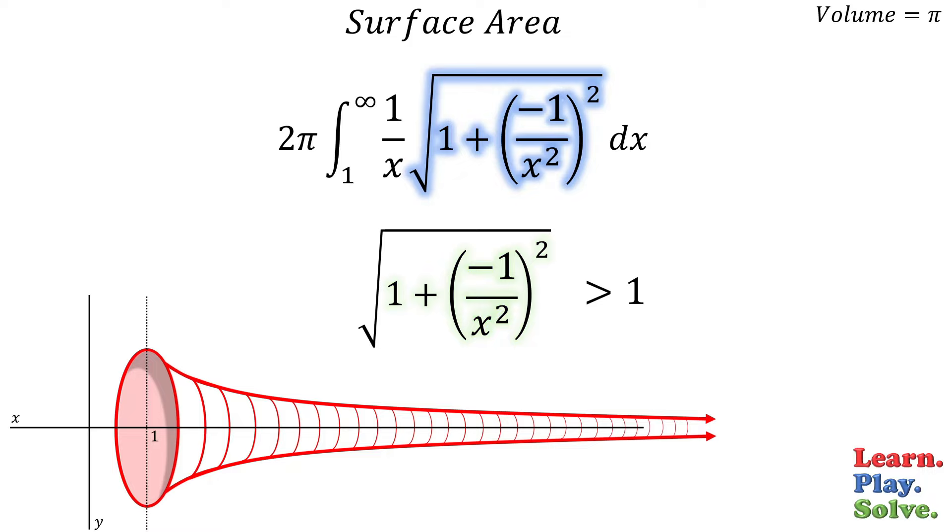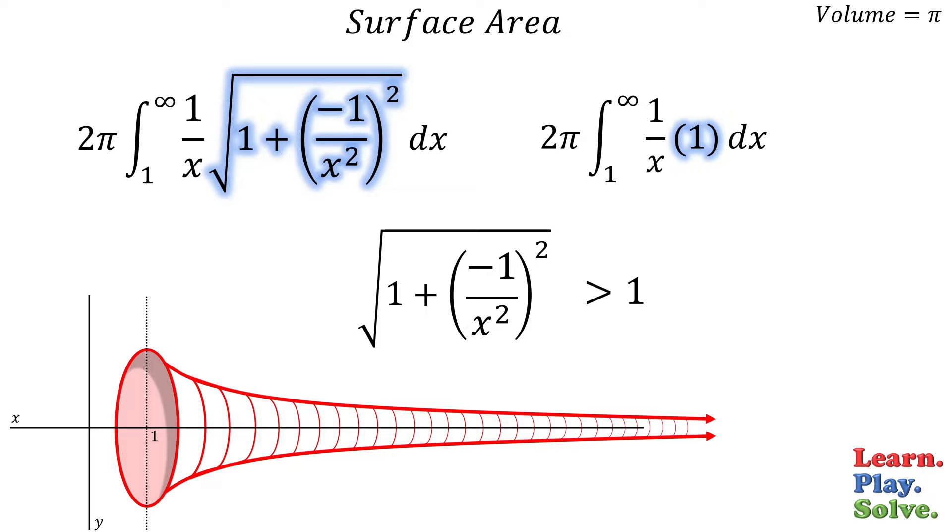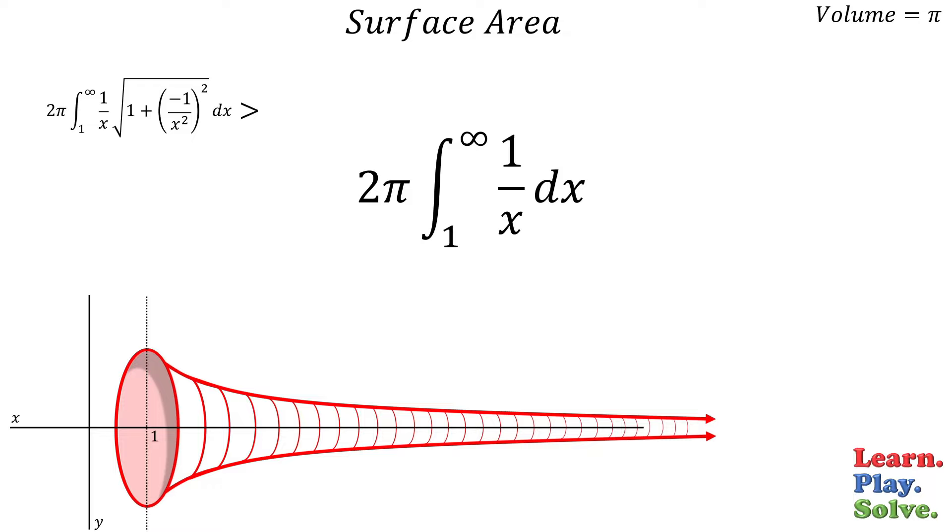Therefore, if we make another integral that's identical in every other way, except we replace the radical with a 1, we will know for certain that it's less than the original. So now we can tackle this much simpler integral and see if it tells us anything.